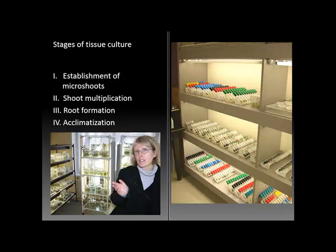Finally, the fourth stage is acclimatization, where the plant is gradually introduced from a completely protected and fed environment into an autotrophic condition where it now has to produce its own food using photosynthesis and be prepared for a life outside of the test tube. There is a similar process to hardening off greenhouse plants for life outdoors, moving plants from the test tube to even a greenhouse environment where they are exposed to pathogens and less protected from environmental conditions. That's the four stages of tissue culture.